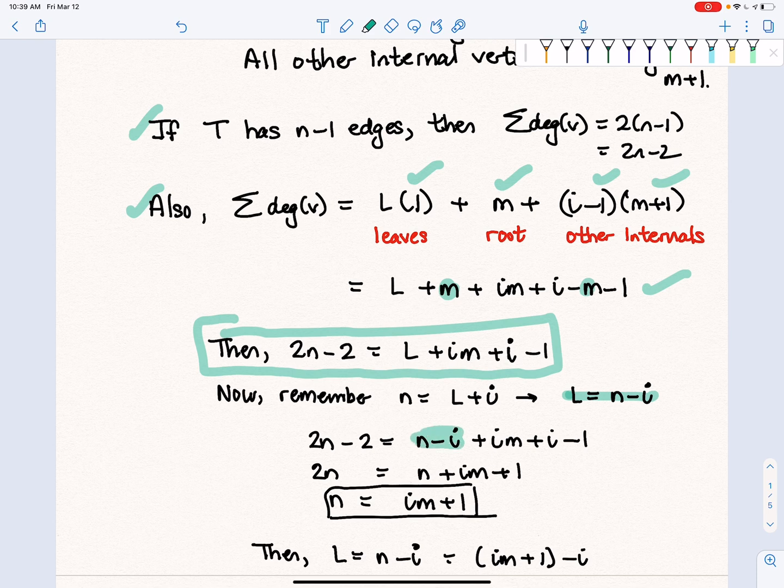Notice this time that the I's cross out, and I added 2 to both sides and subtracted N from both sides. So notice there is the first relationship we wanted: N equals IM plus 1.